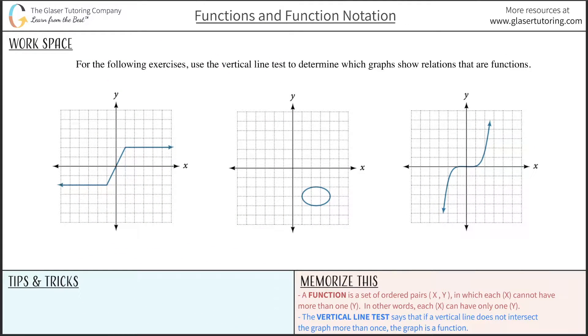For the following exercises, use the vertical line test to determine which graphs show relations that are functions. Take a look at the bottom - we want to definitely memorize this test. The vertical line test says that if a vertical line does not intersect the graph more than once, the graph is then a function. So if a vertical line that you draw anywhere intersects the graph not more than once, then it's a function.